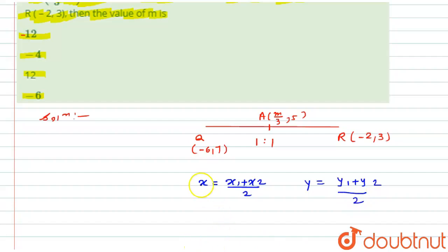Now, here I am only interested in the X coordinate because I want to find the value of M. So the X coordinate for the midpoint is M/3, and X₁ is -6 and X₂ is -2 divided by 2.